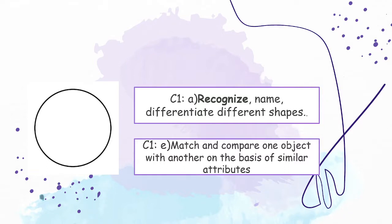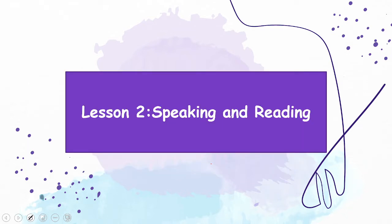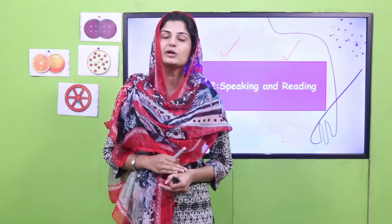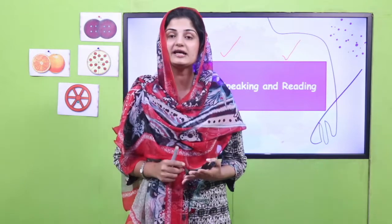Before we start, let me give a few instructions. Today's learning objectives are to recognize, name, and differentiate different shapes, and to match and compare one object with another on the basis of similar attributes. The skills we're going to work on today are speaking and reading skills. There are also a few resources in the description of this video: PowerPoint presentation, lesson plan, worksheet, and extra activity, which you can get by clicking on the link.